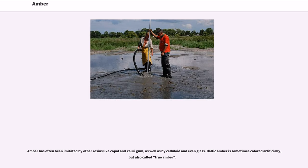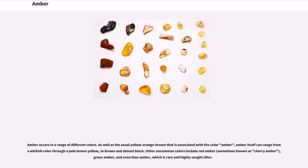Amber has often been imitated by other resins like copal and kauri gum, as well as by celluloid and even glass. Baltic amber is sometimes colored artificially, but also called true amber. Amber occurs in a range of different colors. As well as the usual yellow-orange-brown associated with the color amber, amber itself can range from a whitish color through a pale lemon yellow, to brown and almost black. Other uncommon colors include red amber, sometimes known as cherry amber, green amber, and even blue amber, which is rare and highly sought after.